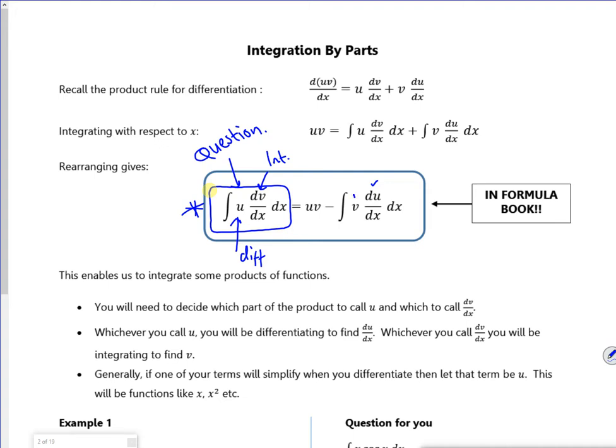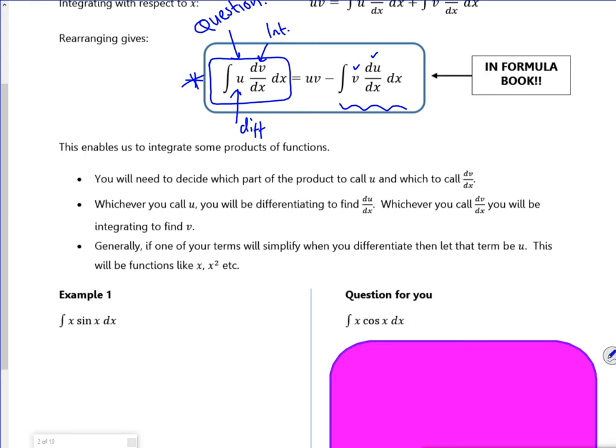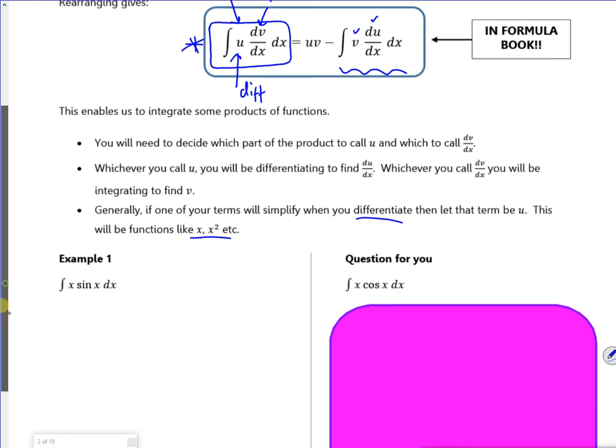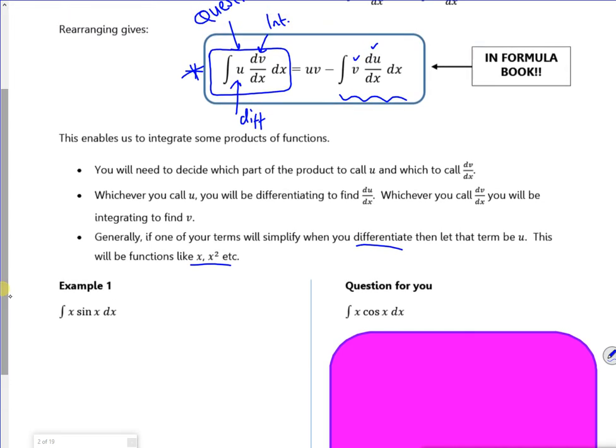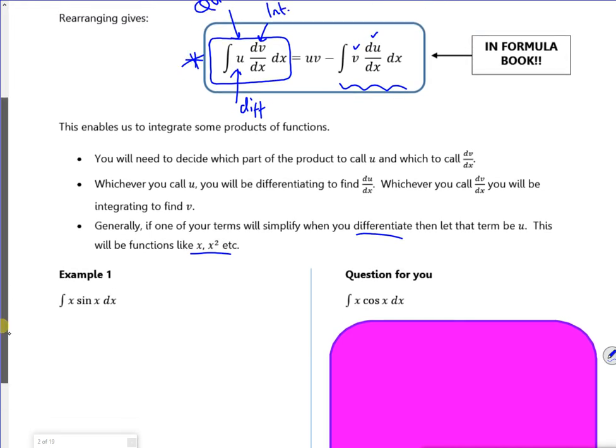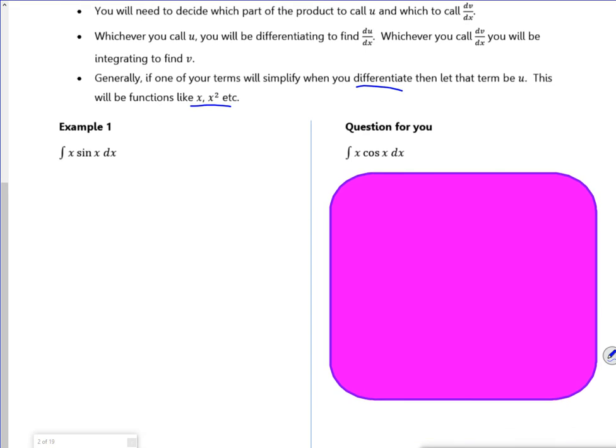I have to be careful how I choose what I integrate and differentiate. Unless it's a log, I differentiate something which reduces down in power to make it easier in this second integral. So that's how it looks. Differentiate things like x or x squared. It's not necessarily the first term. It's just the bit that is easier to deal with when you differentiate it.